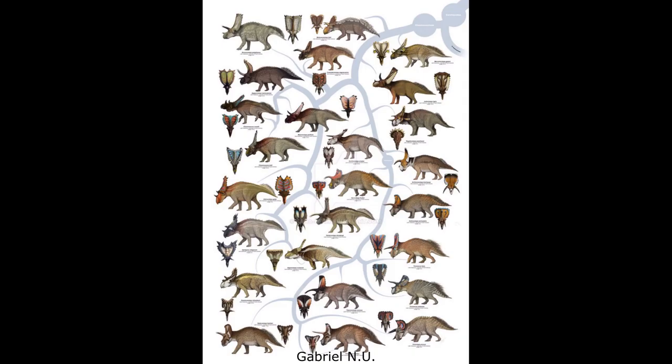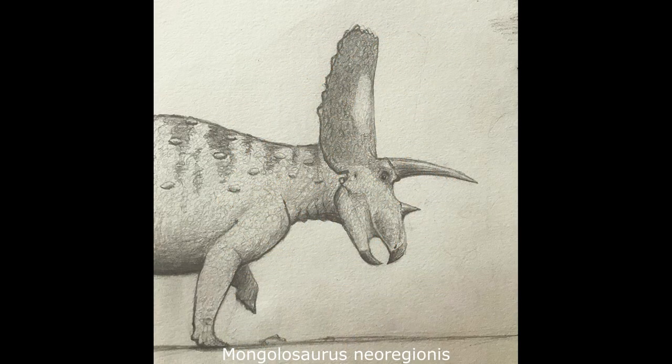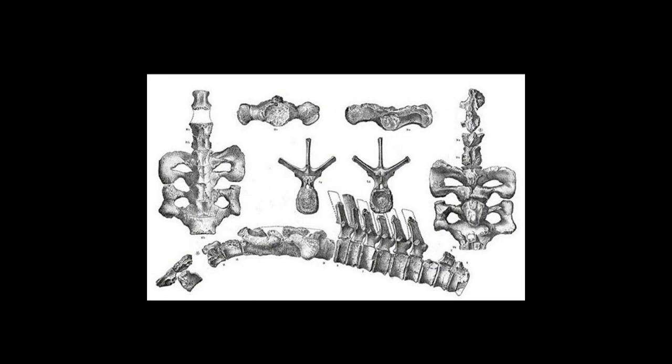There were two ceratopsians present, both of them members of the advanced family Ceratopsidae. One, known as Mongolasaurus neoregionis, was a large chasmosaurine closely related to the North American members of Triceratopsini. As its genus name suggests, this animal was first discovered in late Paleocene fossil beds in Mongolia, where its remains were quite common. Mongolasaurus was a bulky ceratopsian, approximately the same size as Triceratops, at nine meters long and six tons in mass. The holotype of M. neoregionis consisted of a partial skull, lower jaw, vertebral column, shoulder girdle, and pelvis.